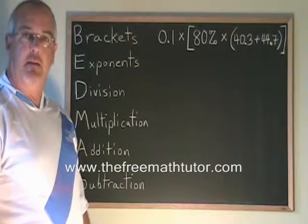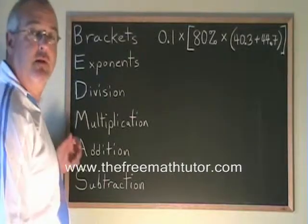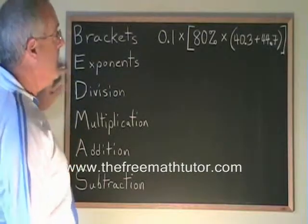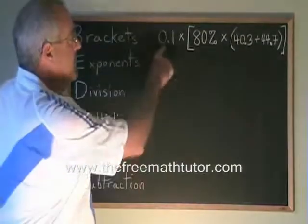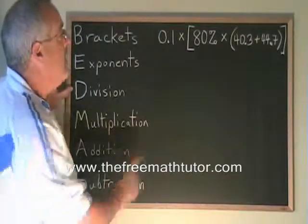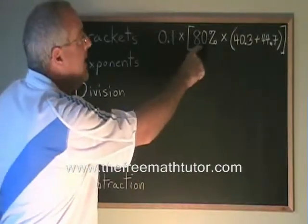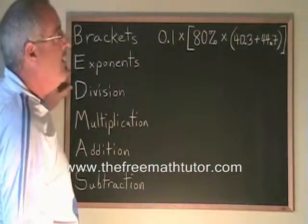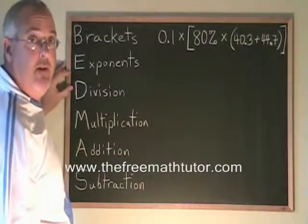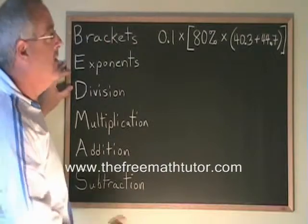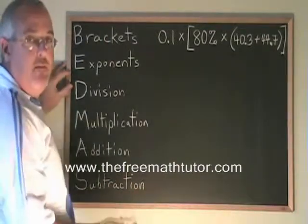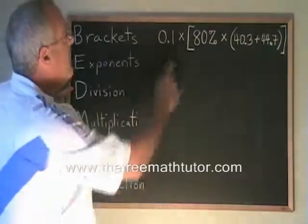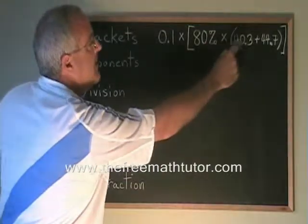Let's look at another example of the order of operations using decimals and percents. Here we have 0.1 times open square bracket, 80% times open round bracket, 40.3 plus 44.7, close the round bracket, close the square bracket. We have nested brackets. We have a multiplication, another multiplication, an addition.